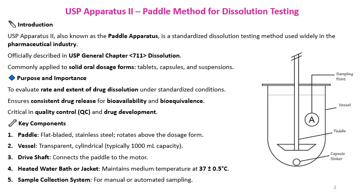The paddle is a flat-bladed stainless steel component that rotates above the dosage form. The vessel is transparent — sometimes amber colored for light-sensitive APIs — cylindrical, with a typical volume capacity of 1000 ml. The drive shaft connects the paddle to the motor. The water bath maintains the temperature of the medium at around 37 degrees Celsius. The sample collection system may be manual or automatic.